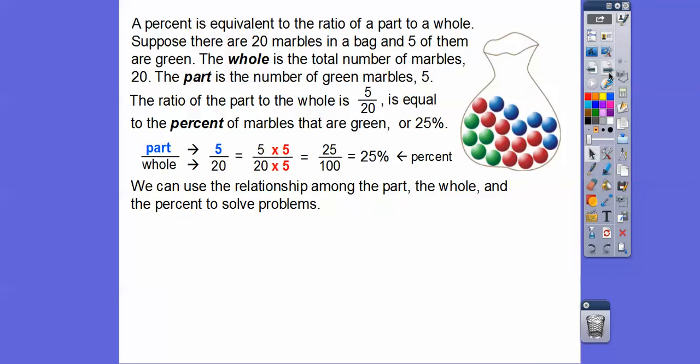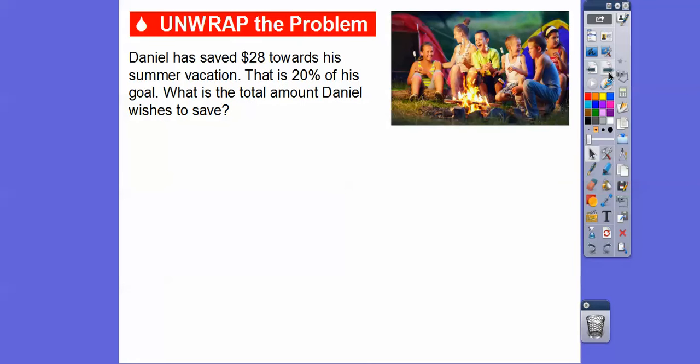We can use the relationship among the part, the whole, and the percent to help us solve some problems. Here's an example. Daniel has saved $28 towards his summer vacation. That's 20 percent of his goal. So what is the total amount Daniel wishes to save?